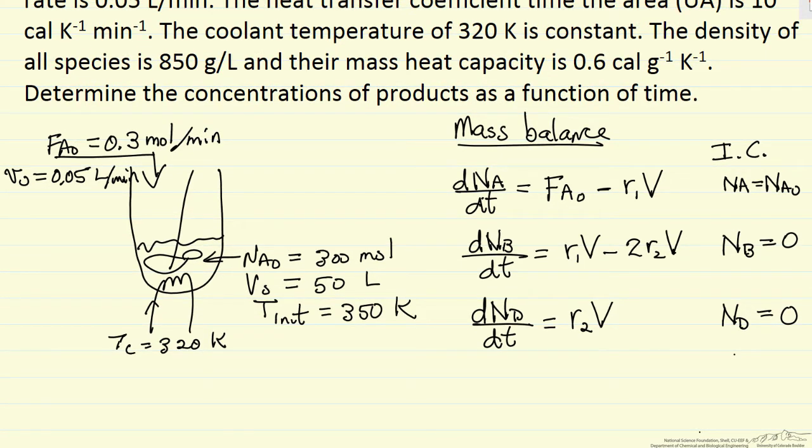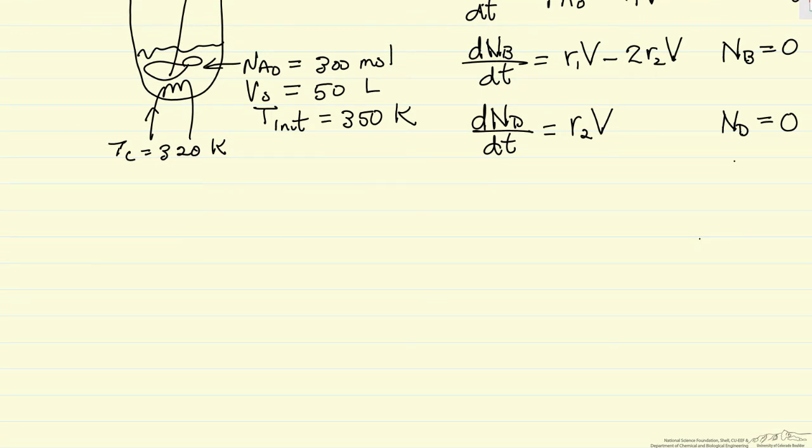So now let's look at energy balance for this system. Because the heat capacities are constant, and we have mass heat capacities, we take the density times the volume, keep in mind the volume is changing with time. Density times the volume is going to be the mass in the reactor, times the mass heat capacity, which is a constant, derivative of temperature with respect to time. This is how the energy in the reactor is changing with time.